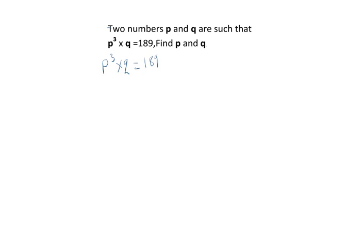write 189 in terms of the prime factors. So we will start with 3. Divided by 3, this is 63. Divided by 3, this gives us 21.